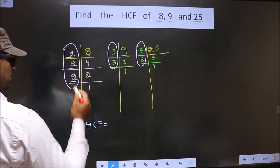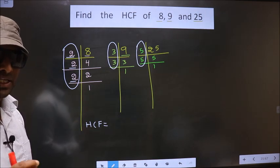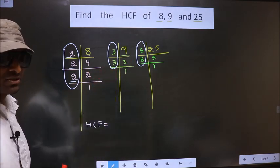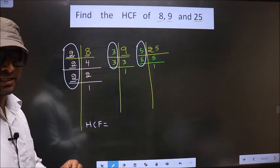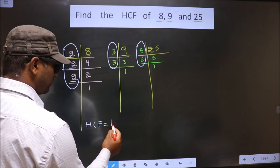No more numbers are present. So, conclusion: there is no number present in all these three places. Whenever no number is present in all three places, we always take the HCF to be 1.